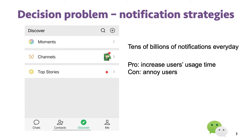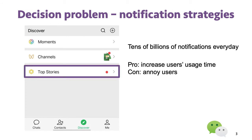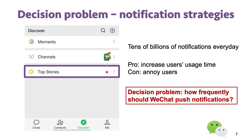WeChat can change the frequency of notifications. For example, now the top stories function only pushes notifications in the evening. Previously, they pushed a notification every time your friends recommend some article. Then, one of the decision problems is how frequently should WeChat push notifications.